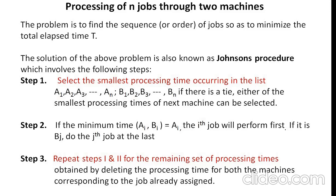Here is Johnson's procedure. Step 1: Select the smallest processing time occurring in the list of jobs given for machine A and B. If there is a tie, either of the smallest processing times of the next machine can be selected. Step 2: If the minimum time is equal to Ai — that is, from the given processing time, Ai exists for the minimum time.